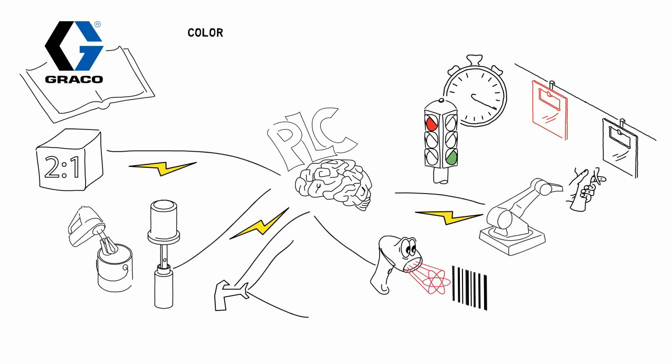But when we said multitasking, we really meant multitasking. Because the PLC brain is monitoring color, flow, parts, pressure, ovens, fans, filters, alarms, and much more. Kind of like walking and chewing gum at the same time, cubed.